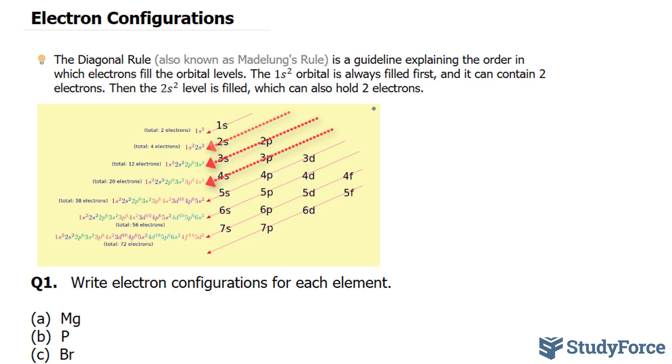For example, the 1s² orbital is always filled first, and it can contain two electrons. Then you have the 2s² level, and that's filled second, and that holds two electrons, and so on.